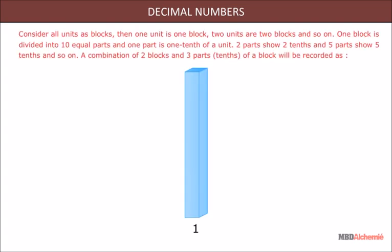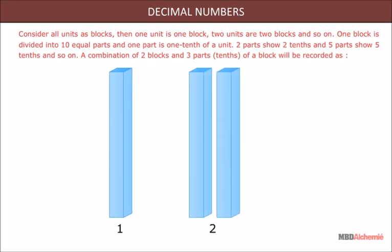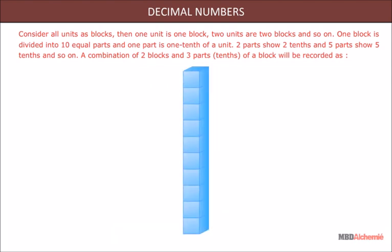Consider all units as blocks. Then, one unit is one block. Two units are two blocks, and so on. One block is divided into 10 equal parts, and one part is one tenth of a unit. Two parts show two tenths, and five parts show five tenths, and so on.